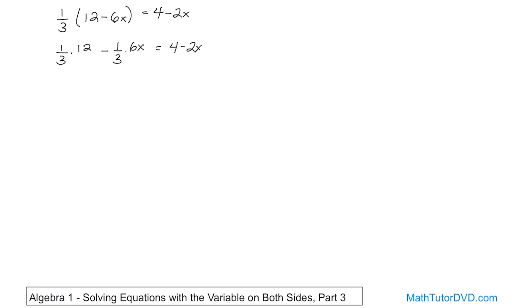So what we have is 12 on the top and 3 on the bottom. So 12 divided by 3 is 4, and then we have the minus sign. And then what we'll have here is 6x on the top if we do the multiplication, and 3 on the bottom.